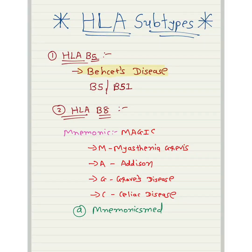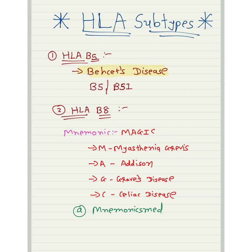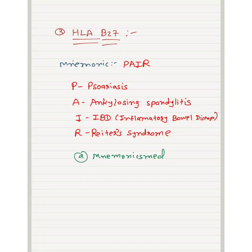Second is HLA-B8. The mnemonic is MAGIC: M for Myasthenia Gravis, A for Addison's disease, G for Graves' disease, C for Celiac disease. You have to remember this mnemonic for HLA-B8.